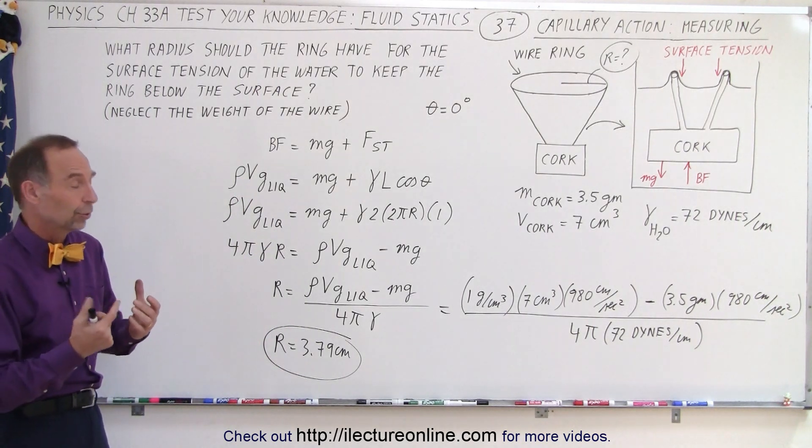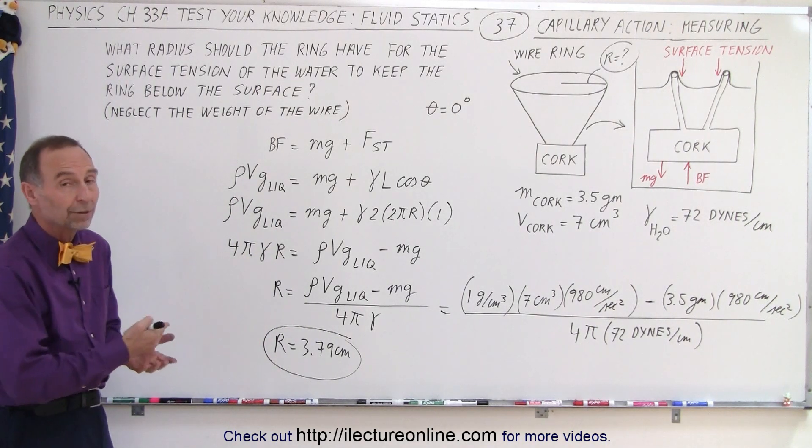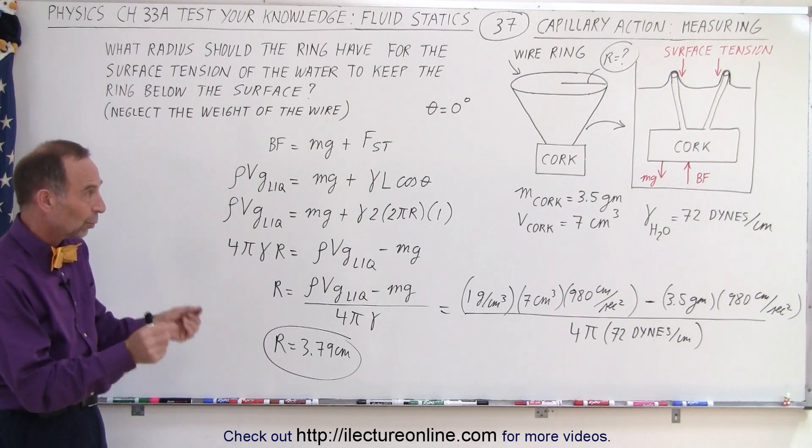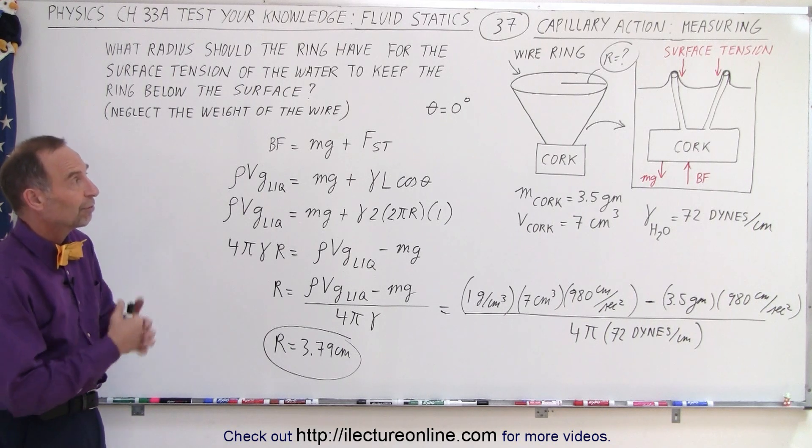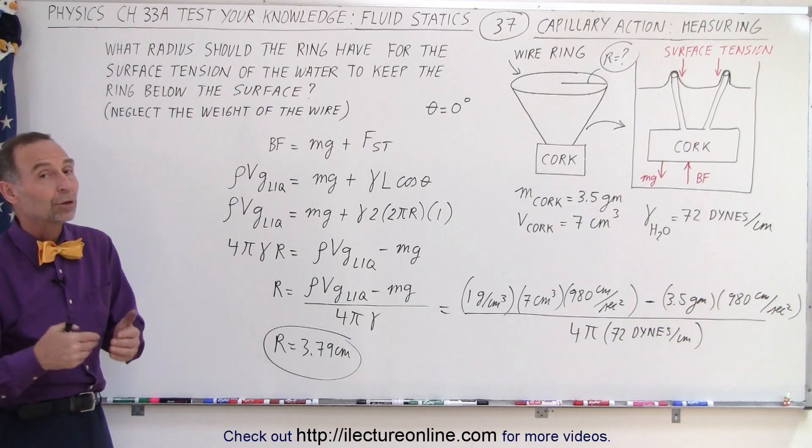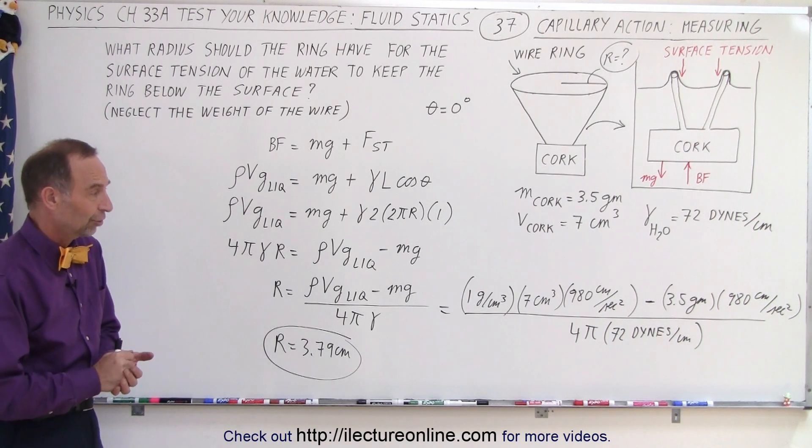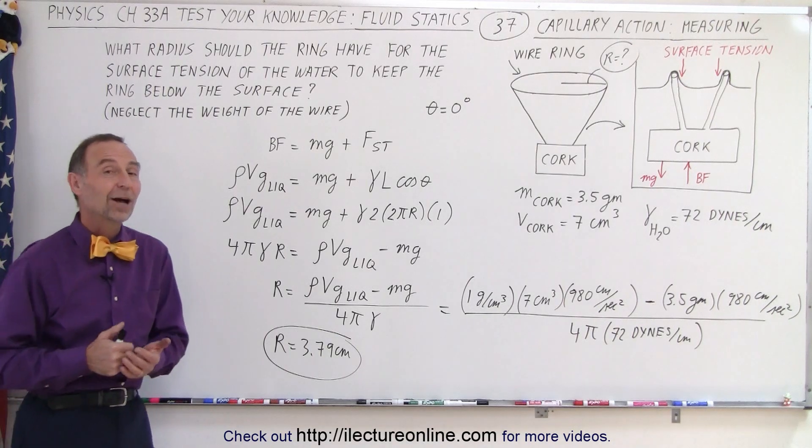In a way, that's one way we could measure the surface tension - by changing the size of the wire or changing the size of the cork so that we find just the limit before it breaks through. That's how we could potentially measure the surface tension. That is how it's done.